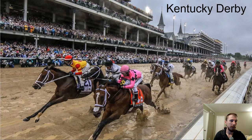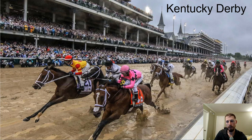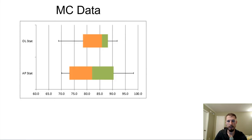Now we're going to move into bivariate data, which just means we have two variables that we're analyzing the relationship or association between — or even the correlation, which we'll get into a little bit today and more tomorrow. I think it's much more interesting. We're going to be looking at the Kentucky Derby and the top speeds of horses over the 130 years that they've recorded data for.